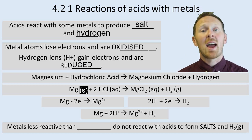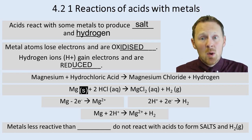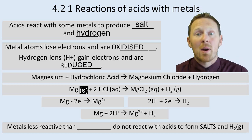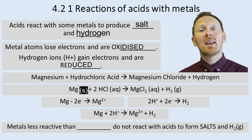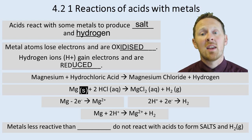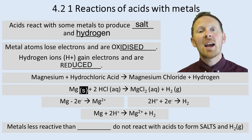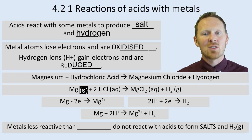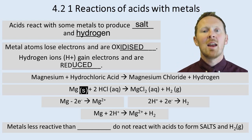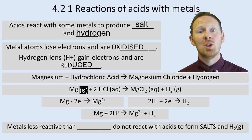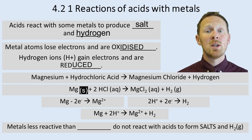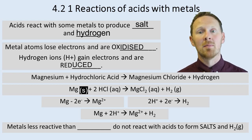Reacts with two moles of HCl, hydrochloric acid, with Aq in brackets which means it's in solution. Makes magnesium chloride, MgCl2, in solution (Aq), and hydrogen, which is a gas, so it's got the G in brackets. Make sure you understand state symbols and the difference between a word equation and a symbol equation.